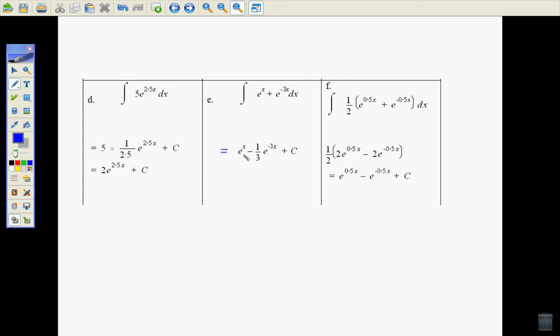e to the x integrates to e to the x. e to the minus 3x integrates to minus 1 third e to the minus 3x plus the constant. You can see we just keep applying that rule.